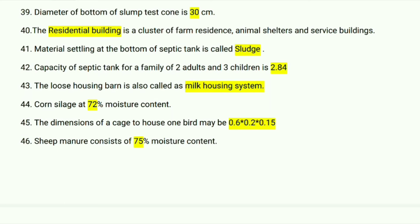The capacity of a septic tank for a family of two adults and three children is 2.84 cubic meters. The loose housing barn is also called the milk housing system. Corn silage has 72 percent moisture content. The dimension of a cage house for one bird may be 0.6 by 0.2 by 0.15 meters.